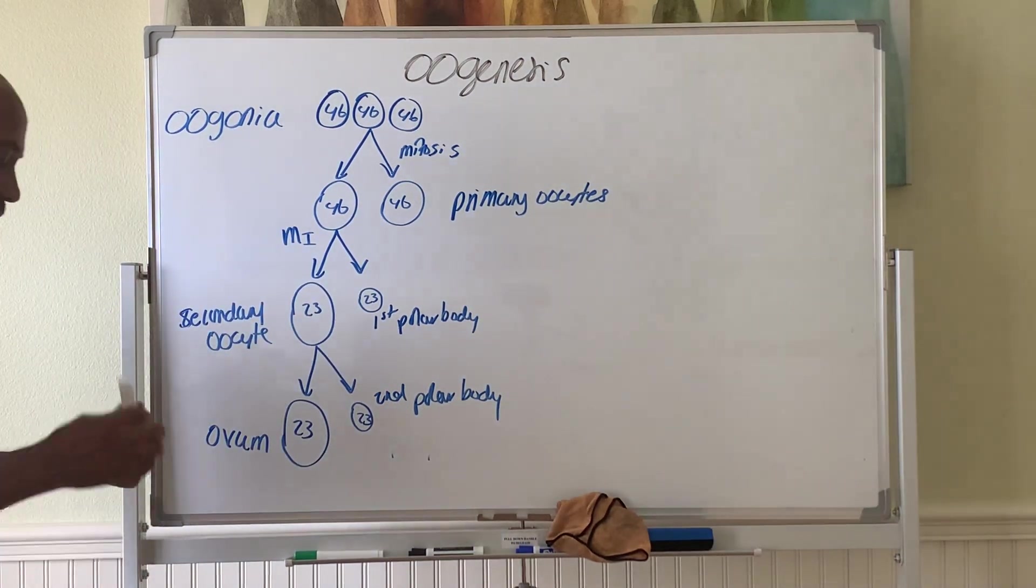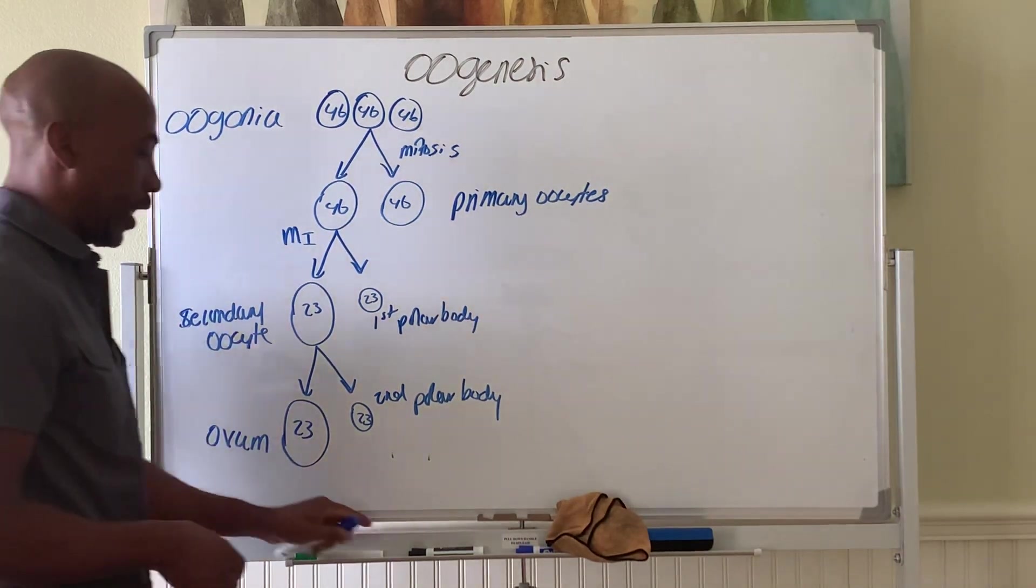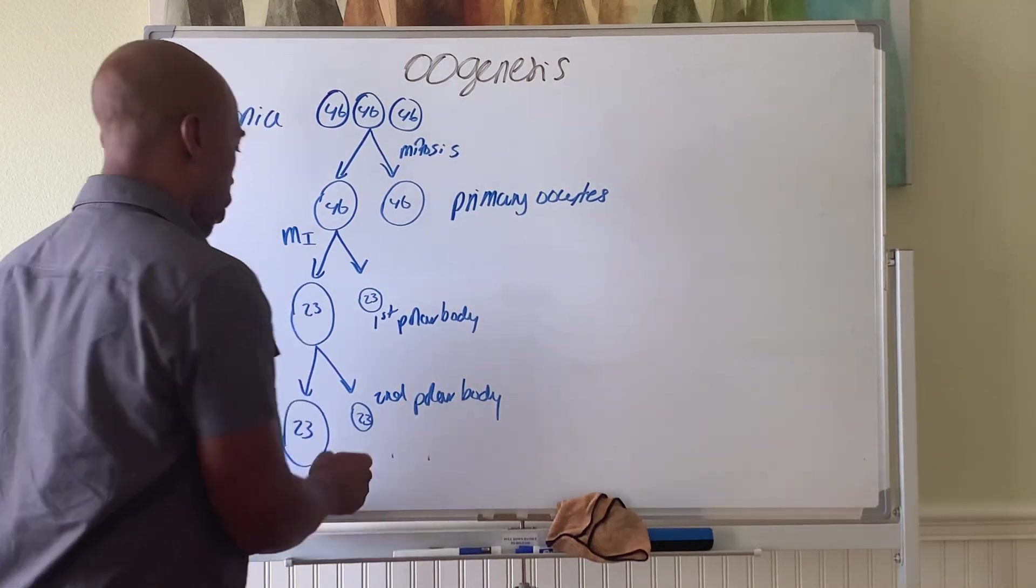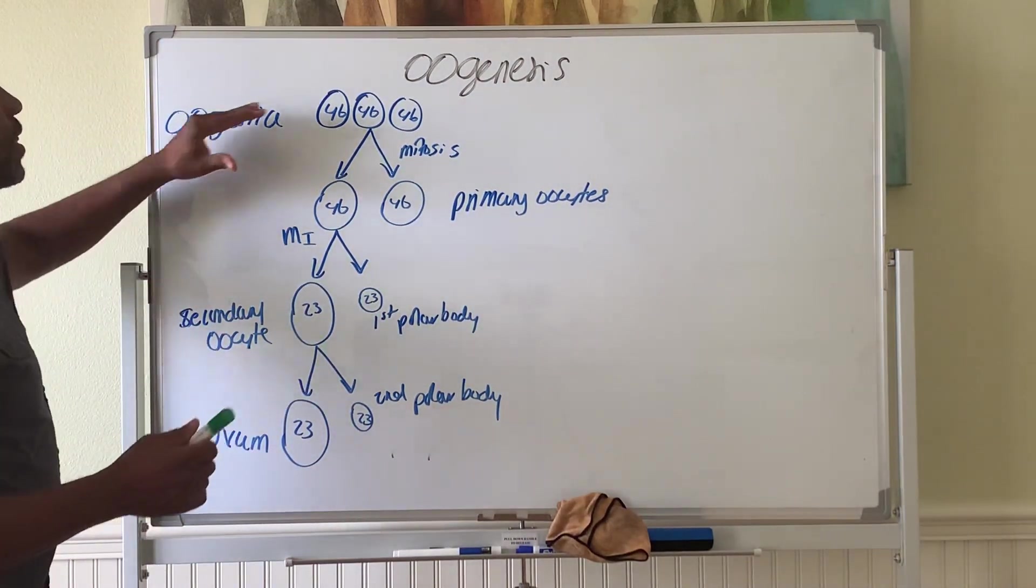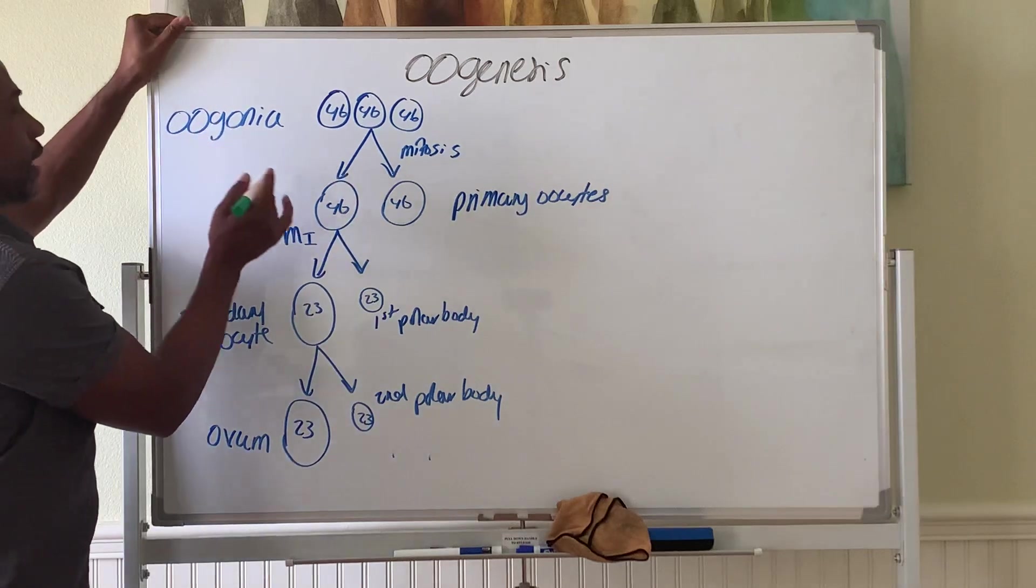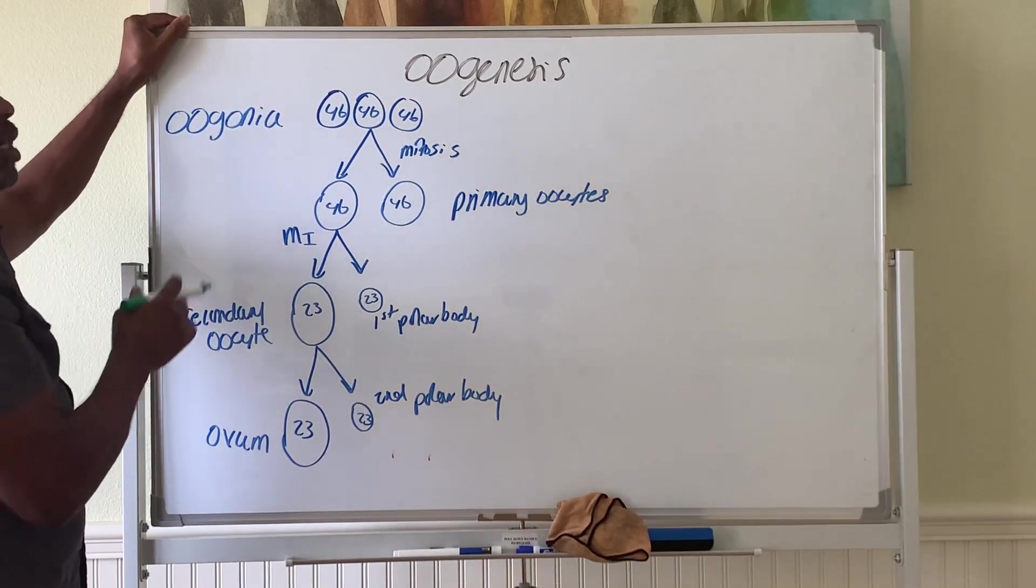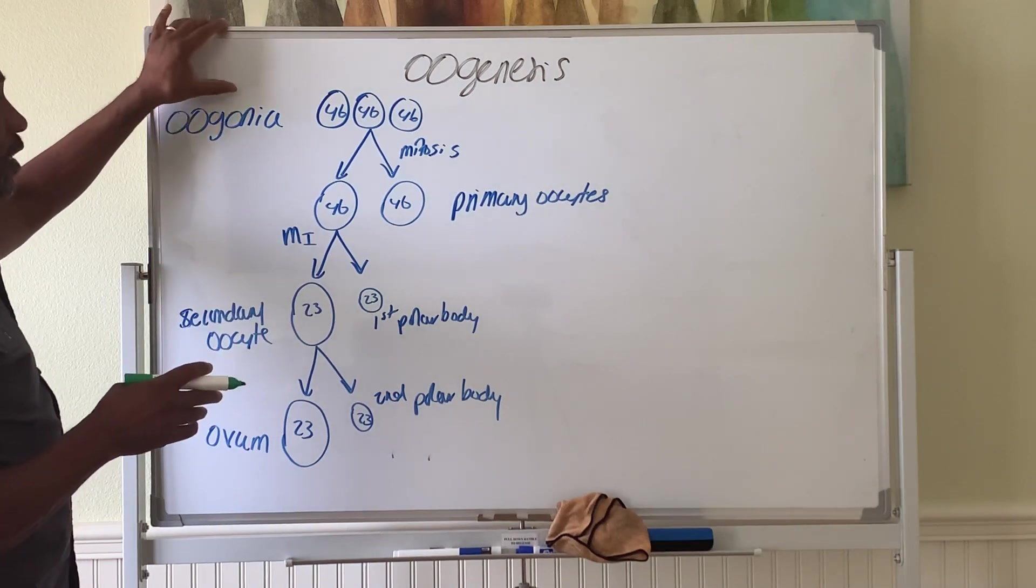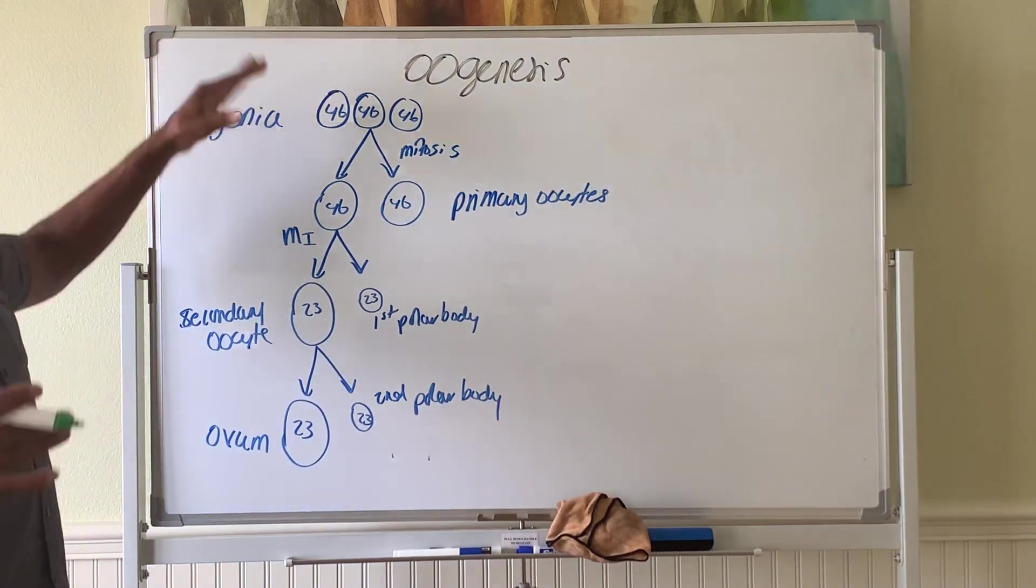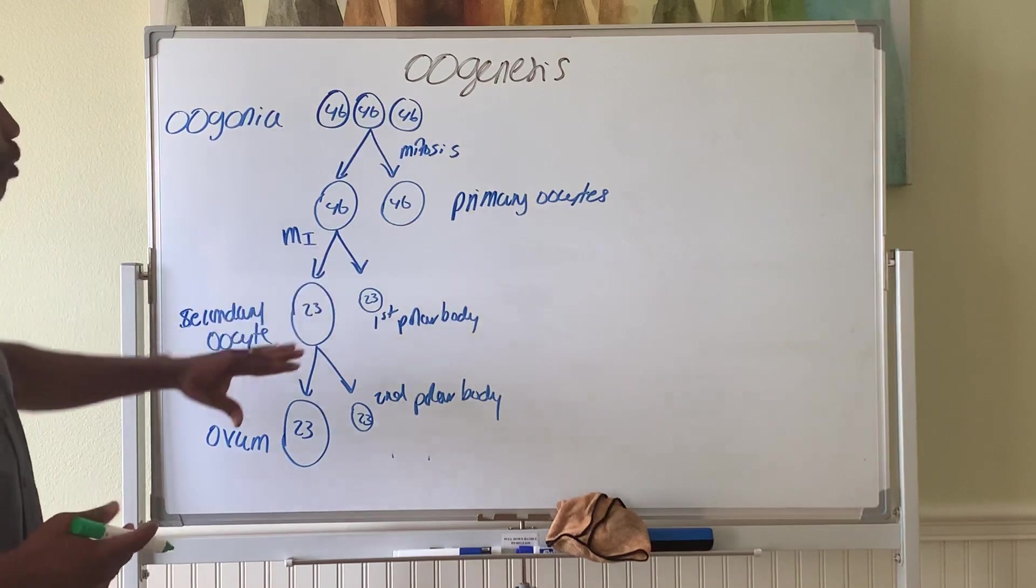So, let's put in some caveats here, some peculiarities that take place with the female system. This begins, this process begins during the first probably five months, first two months, frankly, of pregnancy. While you're in the uterus, you already start this process.